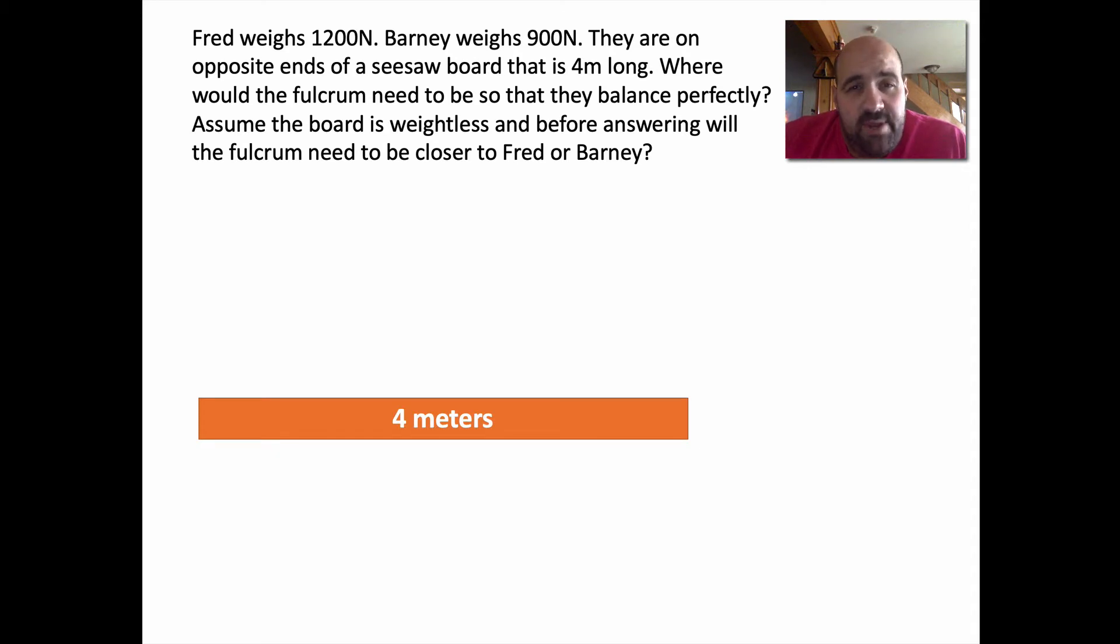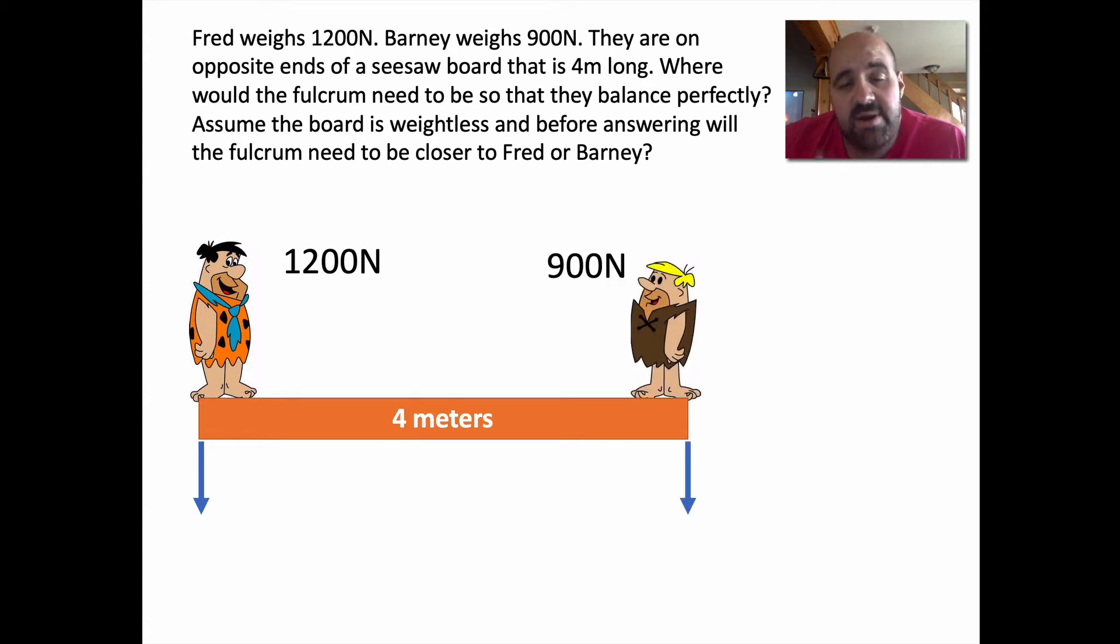So we have a board that's four meters long. Fred's on one side, he's 1200 newtons. Barney's on the other, he's 900. Now normally seesaw is balanced directly in the middle. We're not going to balance this directly in the middle because if we put the pivot point right in the middle, if we put the fulcrum, the thing that the seesaw is going to balance on, we know that it would tilt more towards Fred because Fred is heavier and he's going to generate more torque.